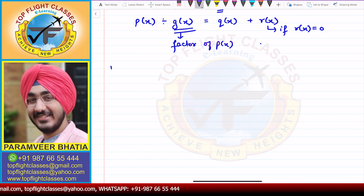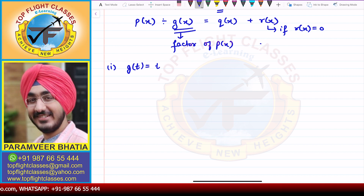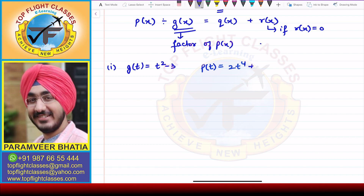The first part we have is g(t) = t² − 3, and p(t) = 2t⁴ + 3t³ − 2t² − 9t − 12. Now we have to solve this using the long division method.